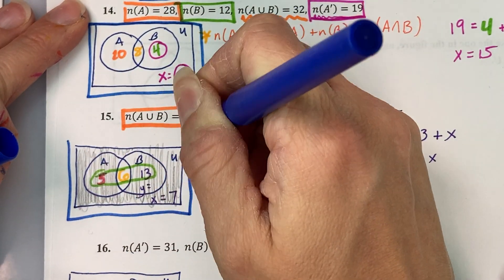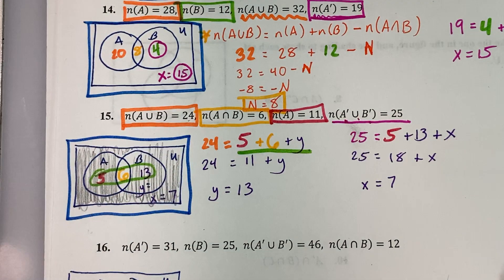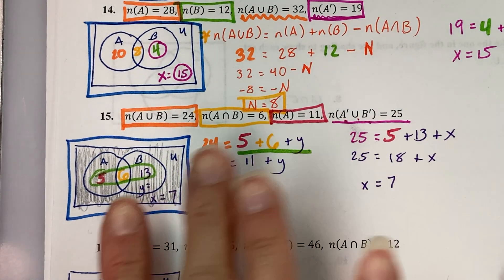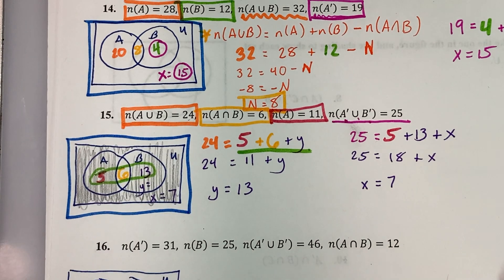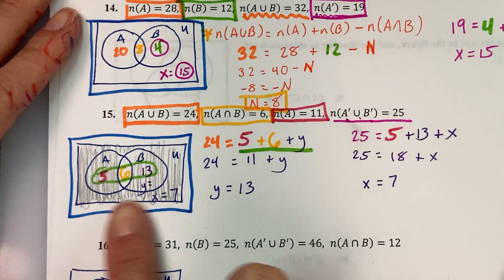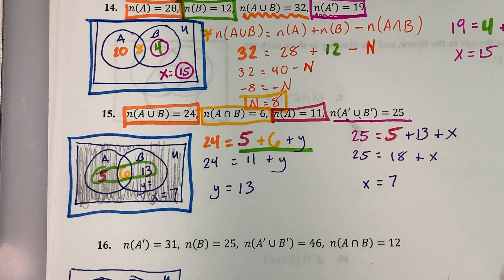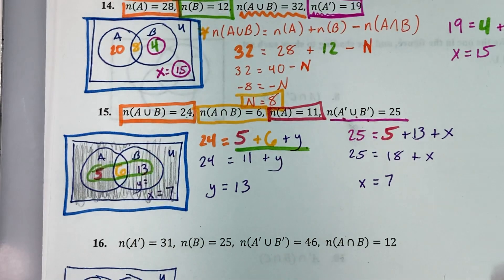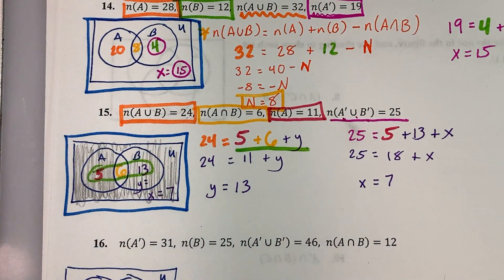I recommend using pencil for these diagrams, because if the shading gets too messy, you can erase it so the numbers in each region remain readable.